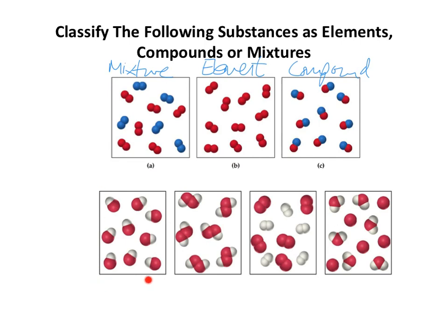In the first box of the bottom row, we've got a red atom bonded to a white atom, repeated throughout — very similar to box C above. Because we've got two different types of atom bonded together, that is a compound, and it's a pure compound.